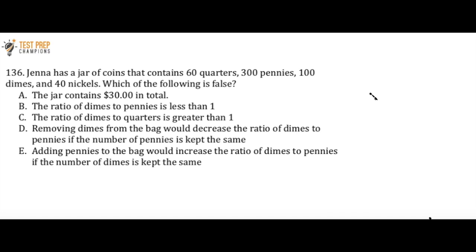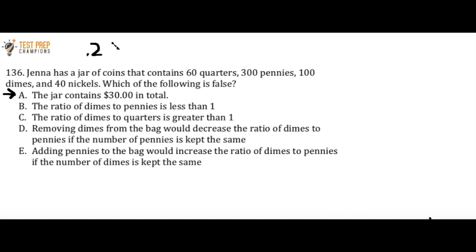This is the hardest question in this video in my opinion. The first thing I'll do is check answer choice A, which says the jar contains $30 in total. I'm going to set up an equation. One quarter is worth $0.25, and we have 60 quarters, so I do 0.25 times 60. For 300 pennies, one penny is worth $0.01, so that's 0.01 times 300. Adding those together along with the dimes — one dime is worth $0.10 — multiplied by 100 because there are 100 dimes.